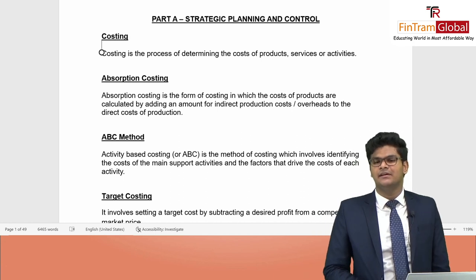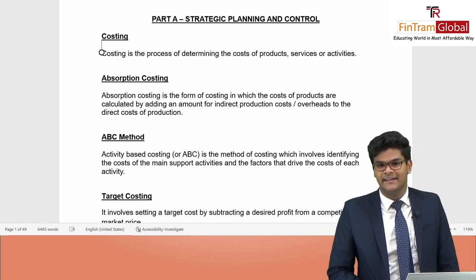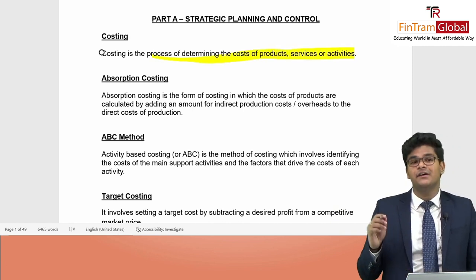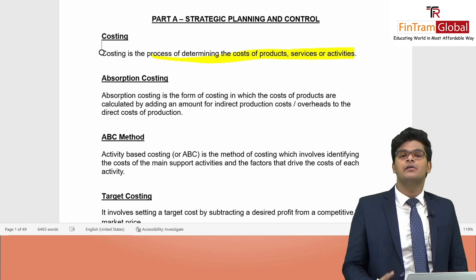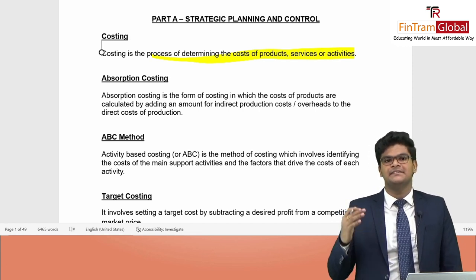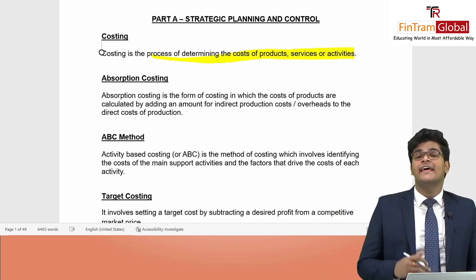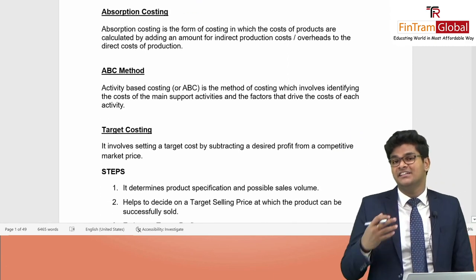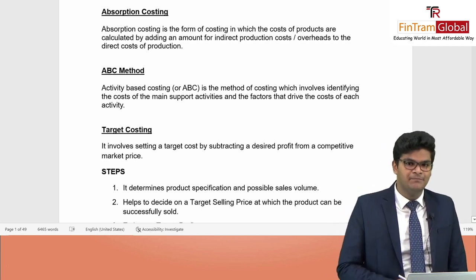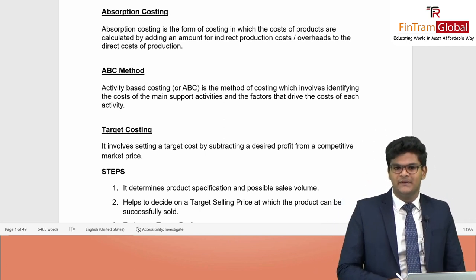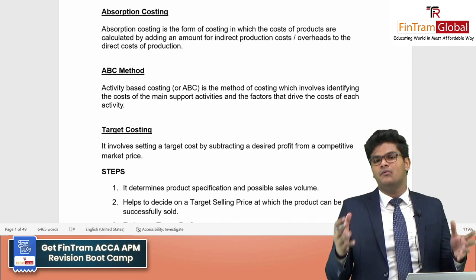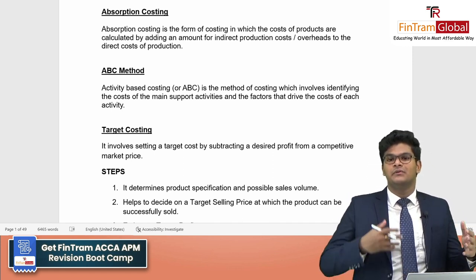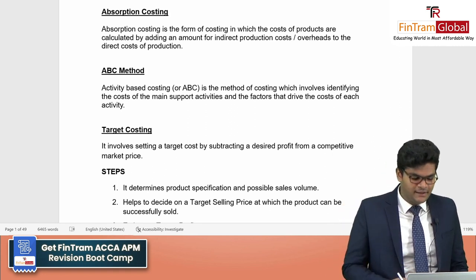The first thing we've learned here is costing. Costing is basically the process of determining the cost of products, services, or activities conducted by a business organization. We looked at several costing techniques. First, the traditional method of costing — absorption costing — where we consolidate all overheads or indirect costs and divide them based on labor hours or machine hours.